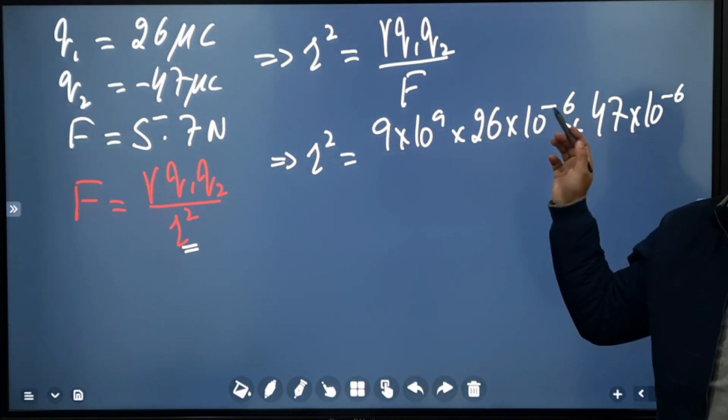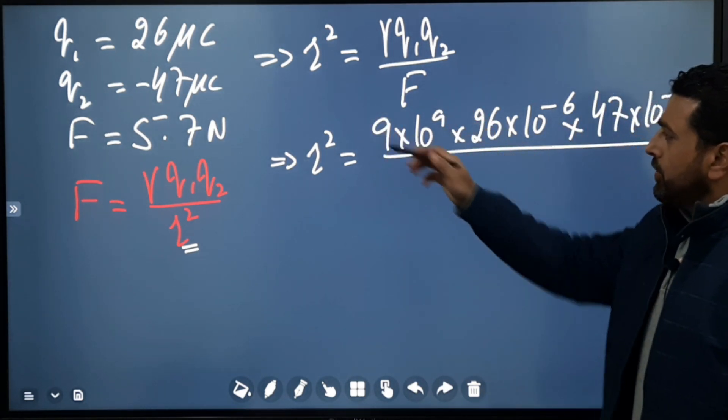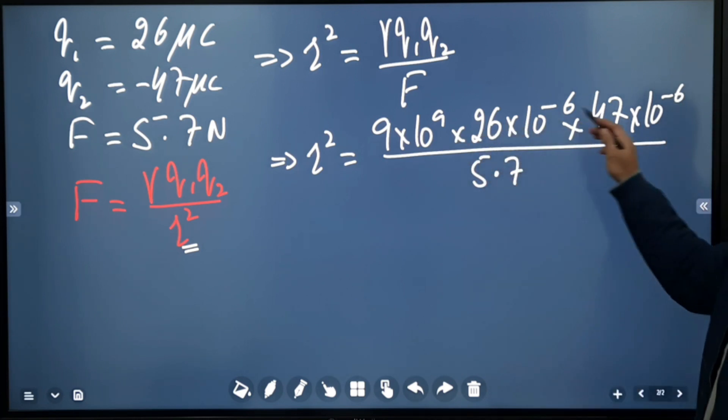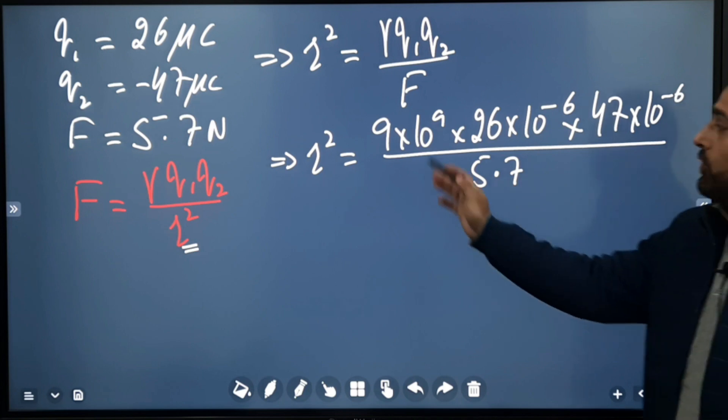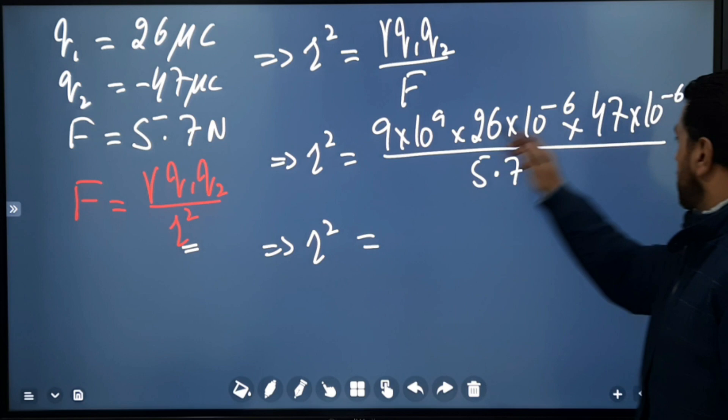We're just using the magnitude values without the minus sign, divided by force, which is given as 5.7 Newtons. Everything is in SI system, so what we'll get will also be in SI system.